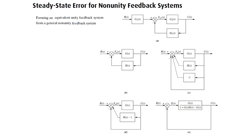The control system often does not have unity feedback because of the compensation used to improve performance and because of the physical model of the system. The feedback path can be a pure gain other than unity or have some dynamic representation. The general feedback system shows the input transducer G1, the controller G2, and the feedback H1 — this is a non-unity feedback system.